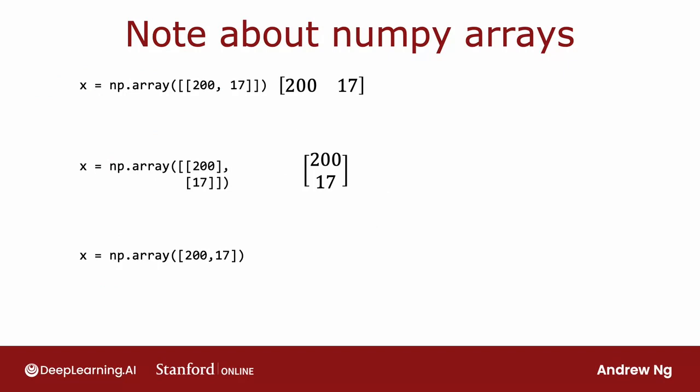So what we did previously when setting x to be input feature vectors was set x to be equal to np.array with two square brackets 200 comma 17. And what that does is this creates a 1 by 2 matrix that is just one row and two columns. Let's look at a different example. If you were to define x to be np.array, but now written like this, this creates a 2 by 1 matrix that has 2 rows and 1 column. Because the first row is just the number 200 and the second row is just the number 17. And so this has the same numbers but in a 2 by 1 instead of a 1 by 2 matrix.